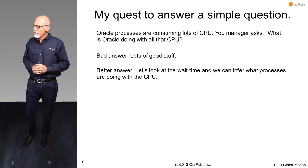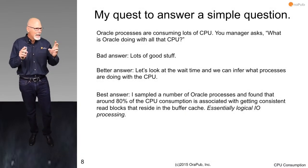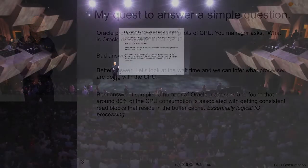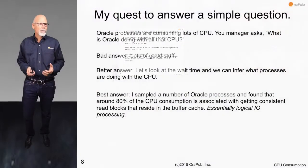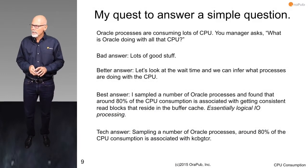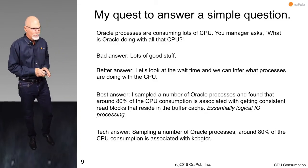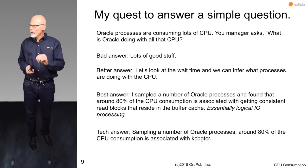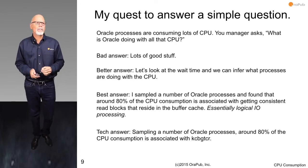Sometimes we might want to know a little more detail so we can give a better answer. The best answer you could give would be something like: 'I sampled a number of Oracle processes and found that around 80% of the CPU consumption is associated with getting consistent read blocks that reside in the buffer cache' - essentially this is logical IO or buffered IO processing. But an even more technical answer - the one I'm going to show you how to get - would be something like: 'Sampling a number of Oracle processes, around 80% of the CPU consumption is associated with the Oracle kernel function KCBGTCR.' I'm going to show you how to get that level of detail.